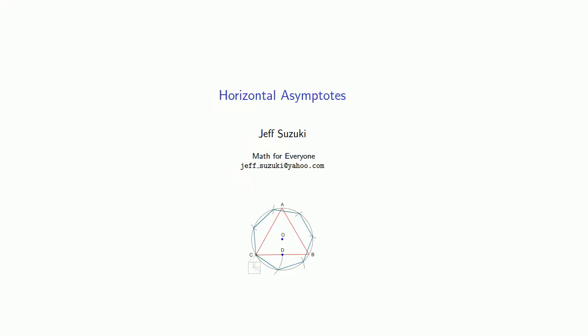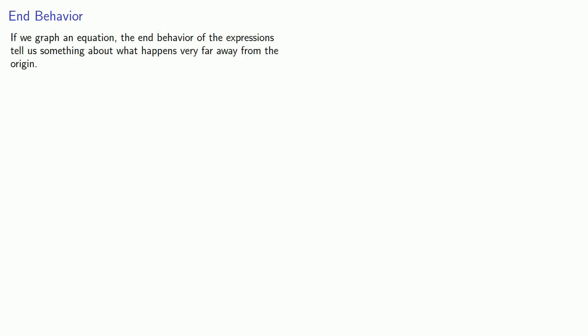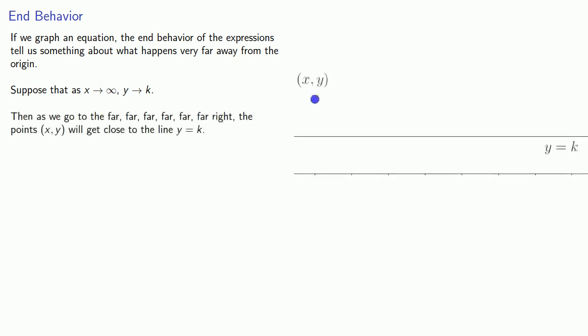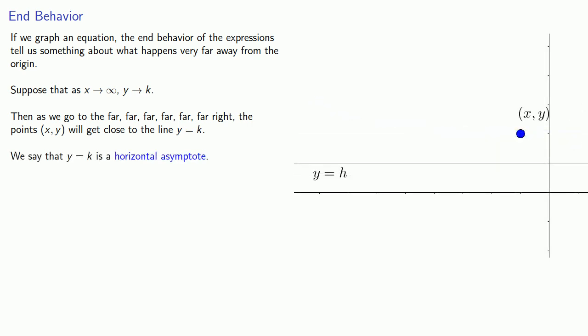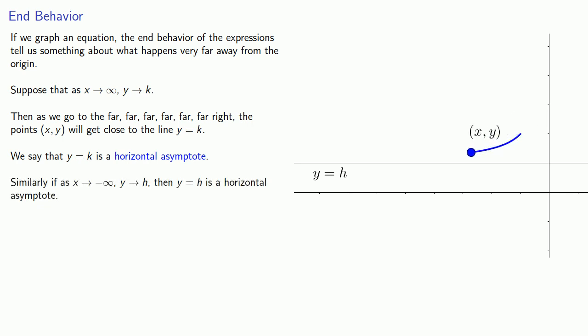This notion of end behavior leads to the idea of a horizontal asymptote. This emerges as follows. If we graph an equation, the end behavior of the expressions tells us something about what happens very far away from the origin. Suppose that as x goes to infinity, y goes to k. Then, as we go to the far right, the points (x, y) will get close to the line y equals k, and we say that y equals k is a horizontal asymptote. Similarly, if as x goes to minus infinity, y goes to h, then y equals h is a horizontal asymptote.